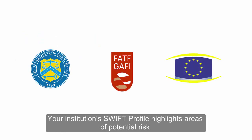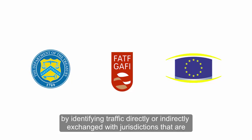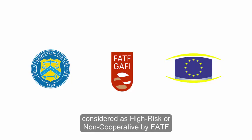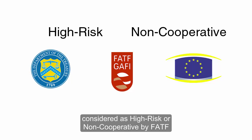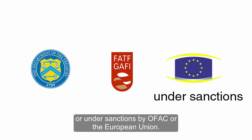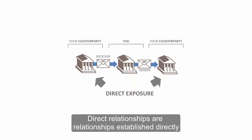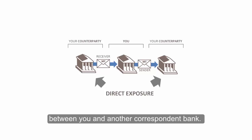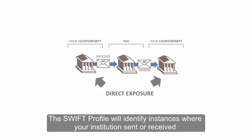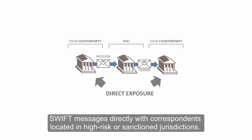Your institution's SWIFT profile highlights areas of potential risk by identifying traffic directly or indirectly exchanged with jurisdictions considered high-risk or non-cooperative by FATF, or under sanctions by OFAC or the European Union. It identifies exposure resulting from both your direct and indirect correspondent relationships. Direct relationships are those established directly between you and another correspondent bank, and the SWIFT profile will identify instances where your institution sent or received SWIFT messages directly with correspondents located in high-risk or sanctioned jurisdictions.